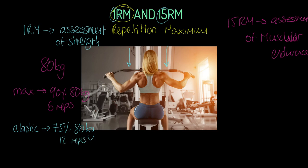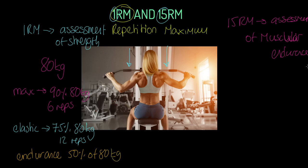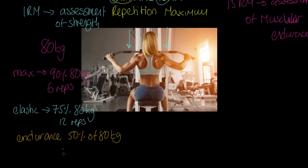If they wanted to work on strength endurance, they would work at something in the region of 50 to 60 percent of one rep max — let's say 50 percent — which would be 40 kilograms, and they would lift that for something like 20 reps.